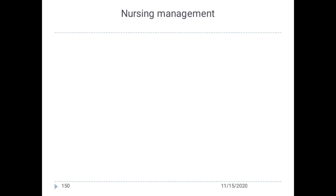Nursing management: In the first 48 hours, the priority nursing process involves collecting subjective data, objective data, and all relevant data to plan care for the initial 48-hour period.